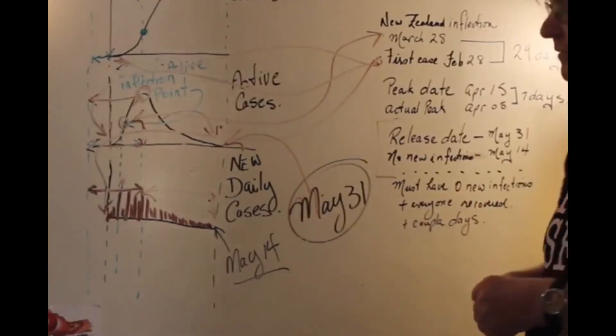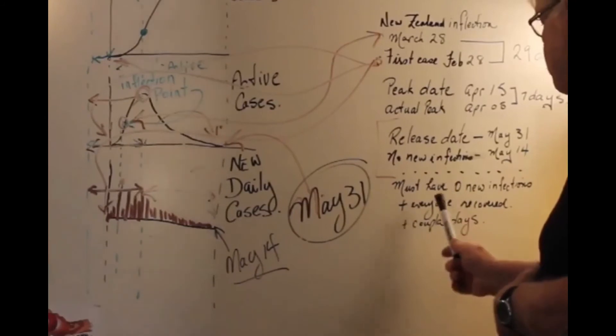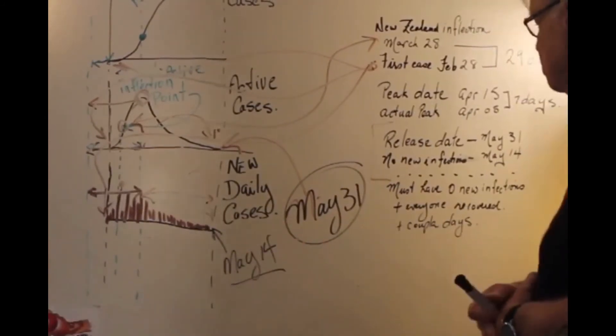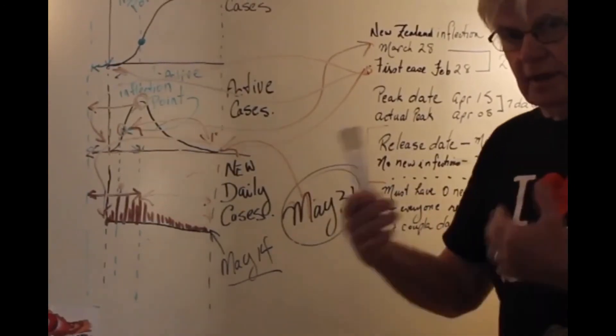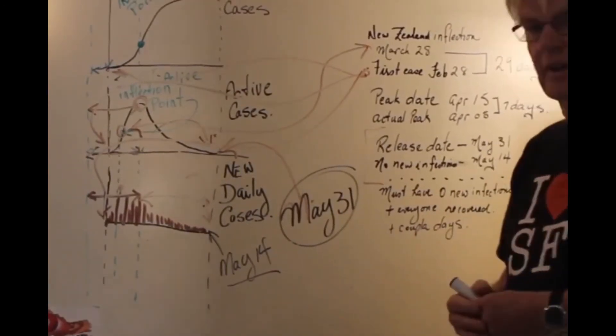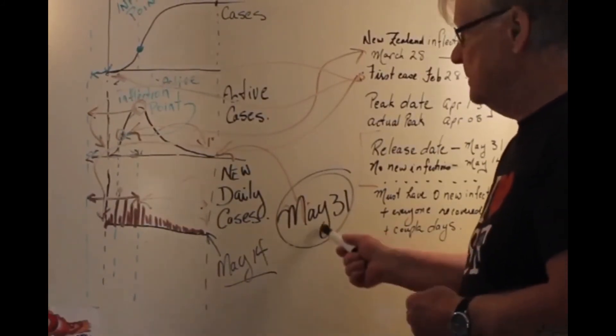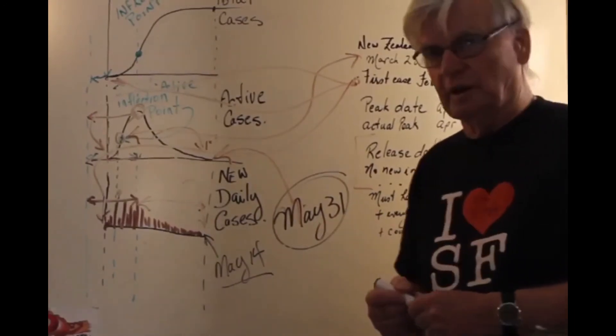However, that is not the time when everyone can go home. You must have zero new infections. Plus, everyone has to recover. So you've got to put 14 days on top of that. And because of the Australians and New Zealanders, they say give it a couple of days more than that. And that will give you May 31st. That's how I came up with that date. And that's what we can do with predictive analysis.